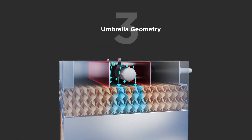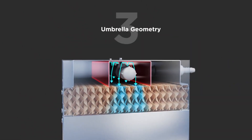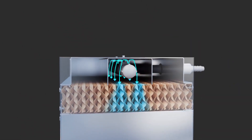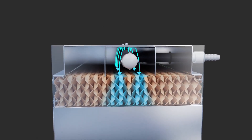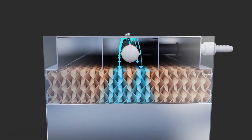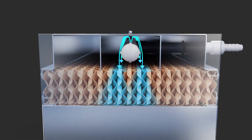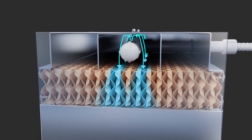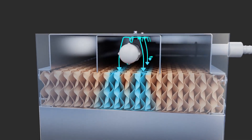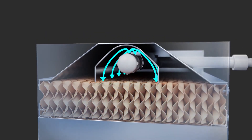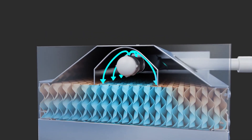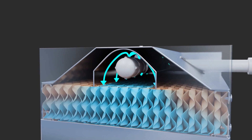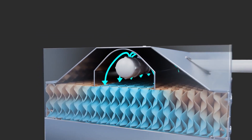Umbrella geometry. Square configurations with 90-degree angles allow water to collect, causing uneven distribution and the potential for localized pooling or flooding. Use 45-degree angle umbrellas to create a parabolic water stream and achieve even distribution.